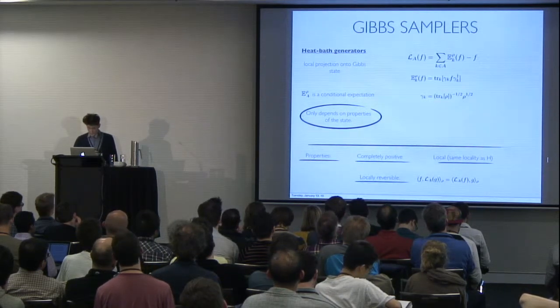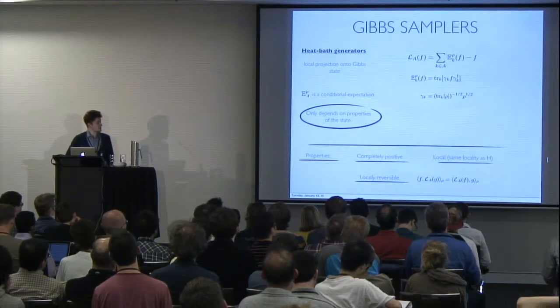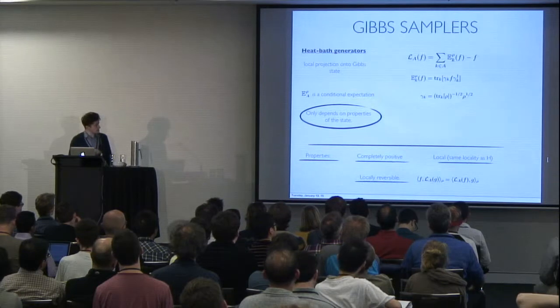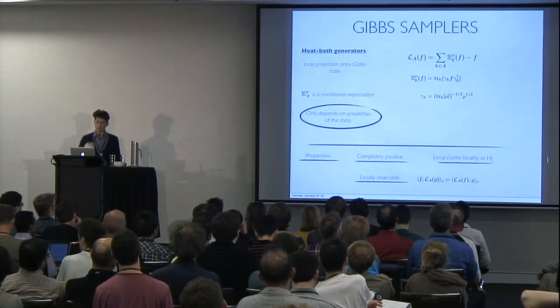Although for general mixed states, you don't have any guarantees in the locality. What's nice about this construction is that if you're dealing with the Gibbs state of a commuting Hamiltonian, then you're guaranteed that this map is also local and has all the same properties as the Davies map.